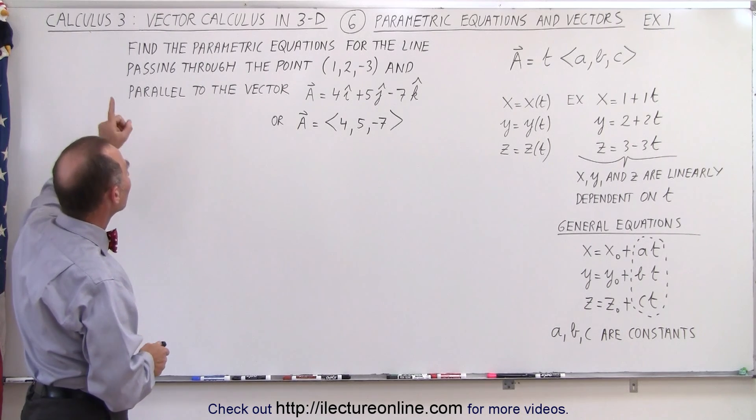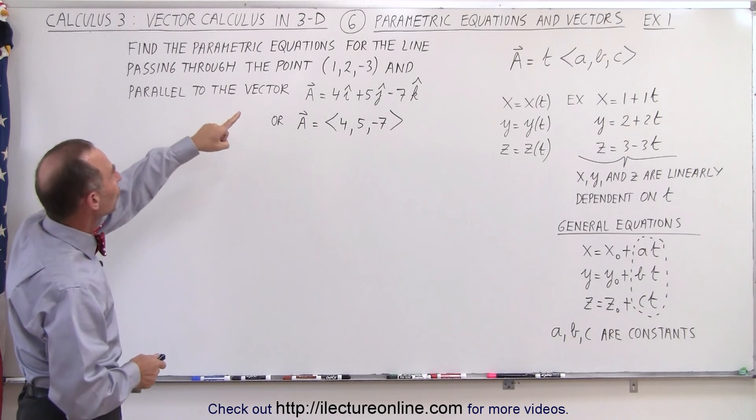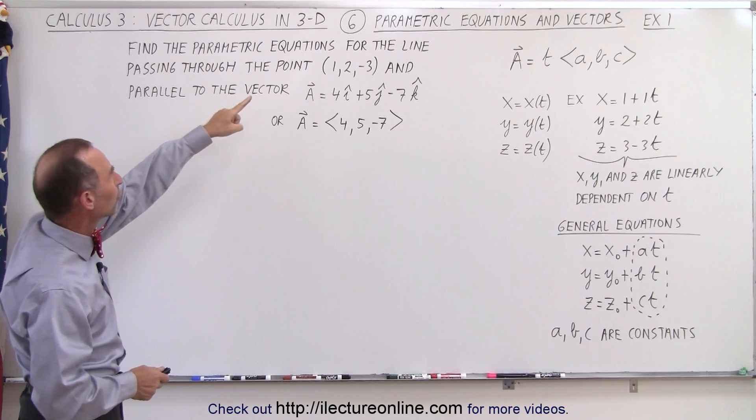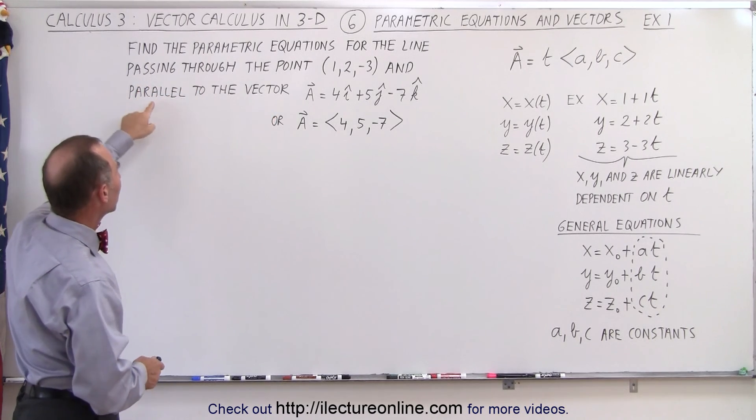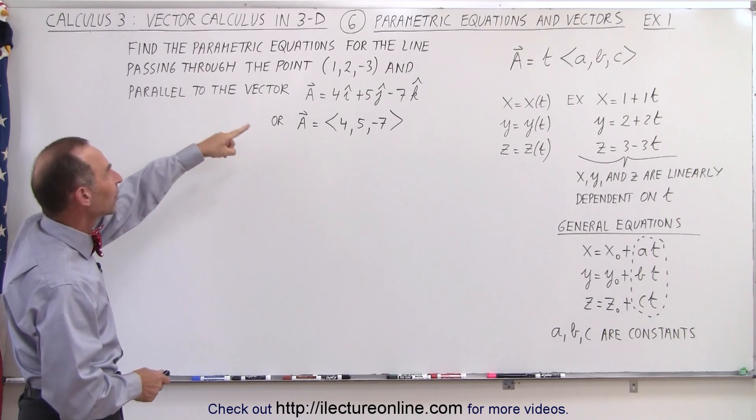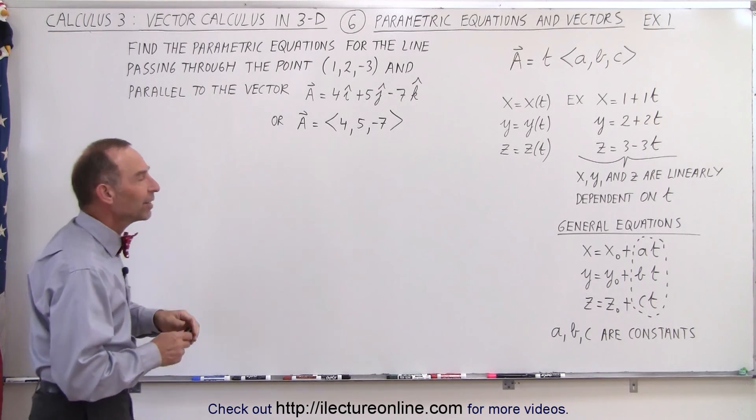So here the question says, find the parametric equations for the line passing through the point (1, 2, -3), and parallel to the vector A defined as 4i plus 5j minus 7k.